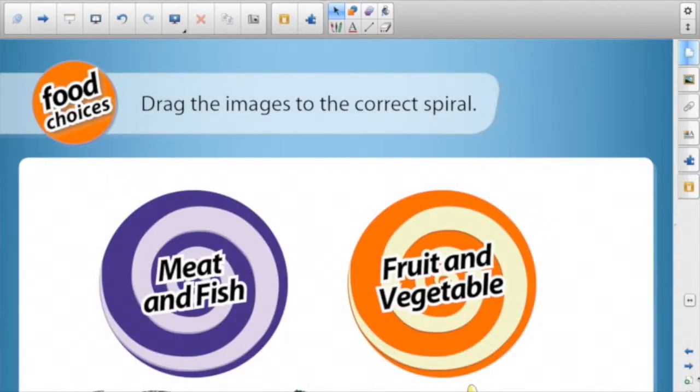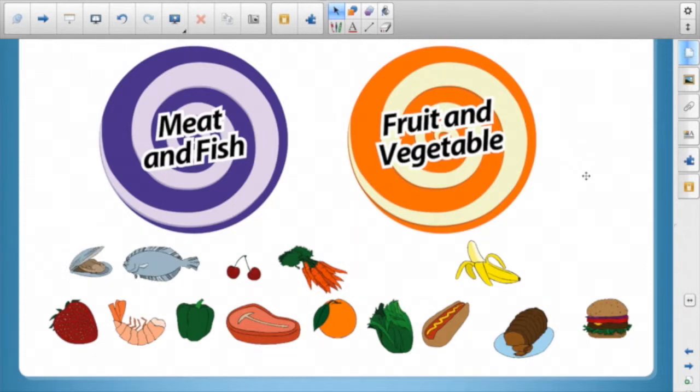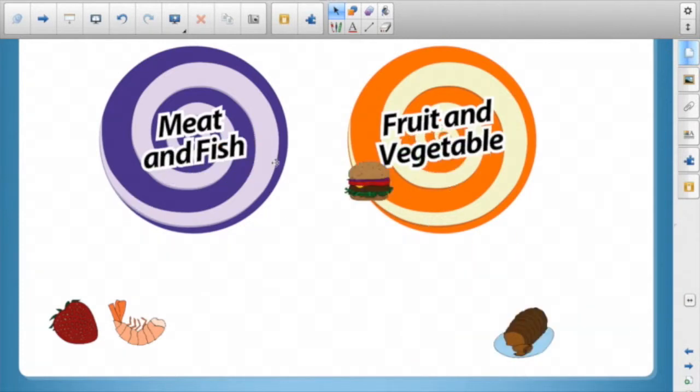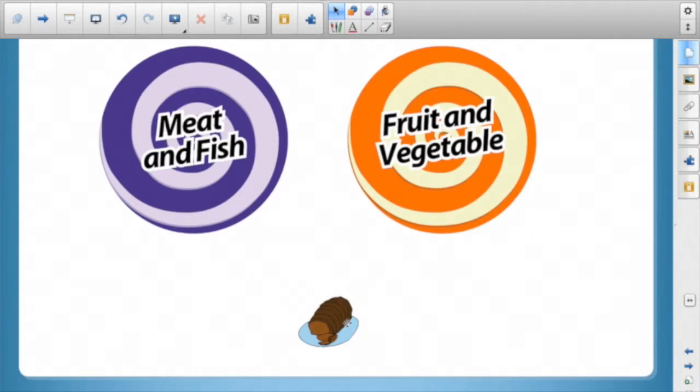So let's take a look. I found these Activity Builder activities. So here we go: meat, fish, fruit, and vegetables. So we drag it over - oh if it's the wrong one it's going to bounce back, if it's correct it'll disappear.